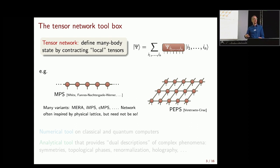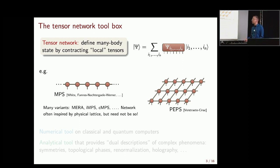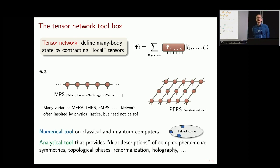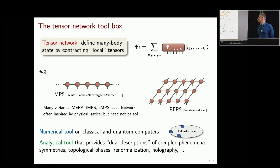The network structure can often be inspired by the physical lattice, but need not be. In quantum chemistry, you might pick orbitals, and things close in the network structure are more correlated in your system. It's somewhat of an art to pick the right network structure depending on context. Tensor networks are a very successful numerical tool on classical computers, and hopefully in the future also on quantum computers — carving out the right corners of Hilbert space.